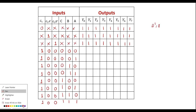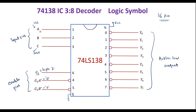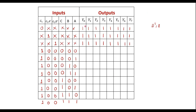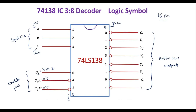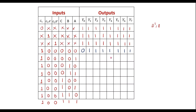When input CBA = 000, Y0 line goes low (0) and all other output lines are high (1). When CBA = 001, Y1 line goes low and all other lines are high. When CBA = 010, Y2 line goes low and all other lines are high. When CBA = 011, Y3 line goes low and all other lines are high.